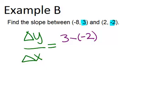Delta x will be the difference in the x coordinates. So that would just be negative 8 minus 2.